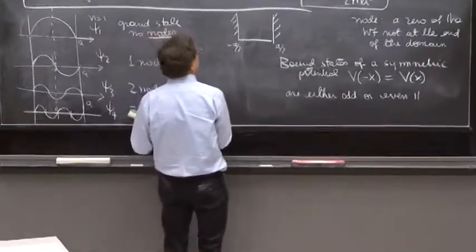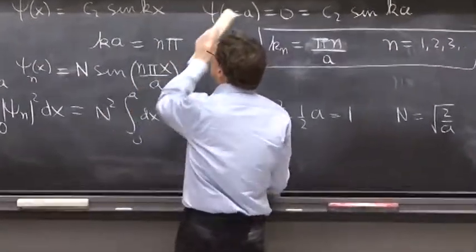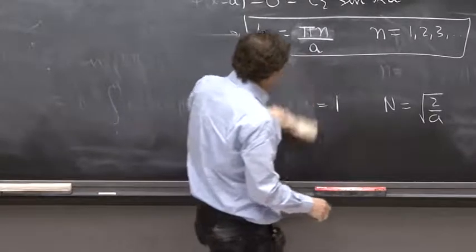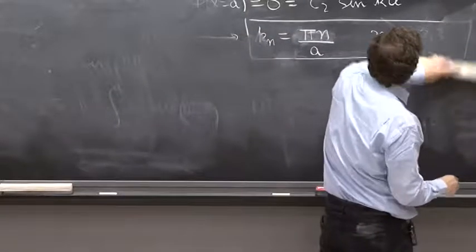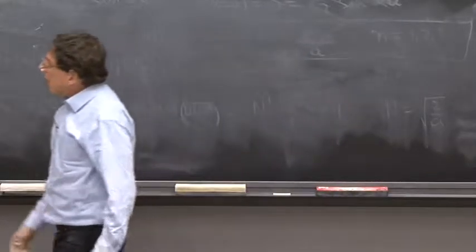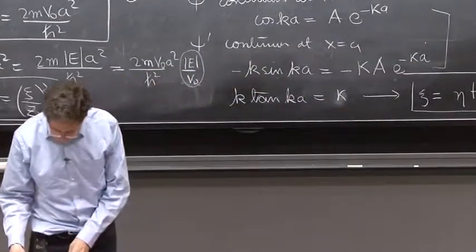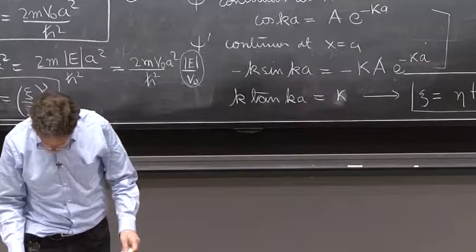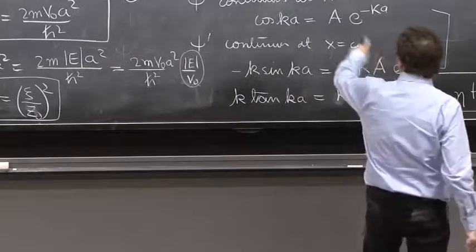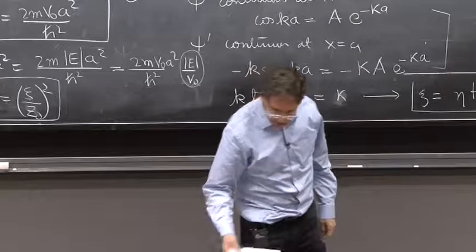So punchline for solutions. What do we have? We have two equations. This equation maybe should be given a number. ψ equal η tan η and η² + ψ² giving you z₀². So how do we solve it? We solve it graphically.